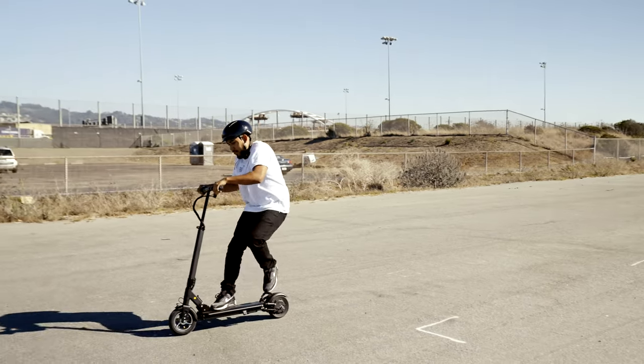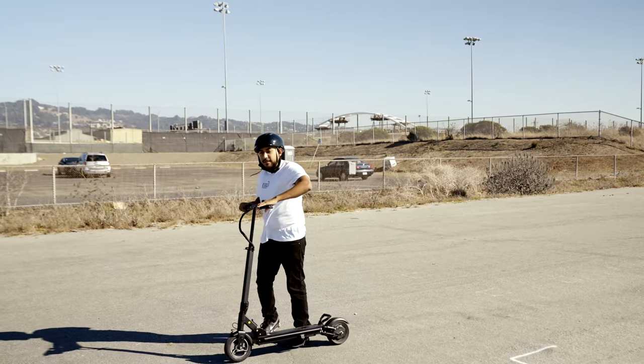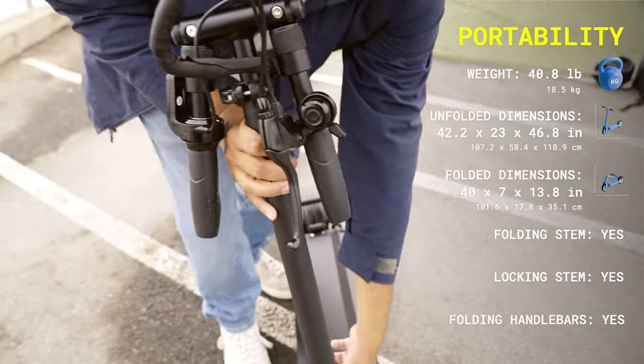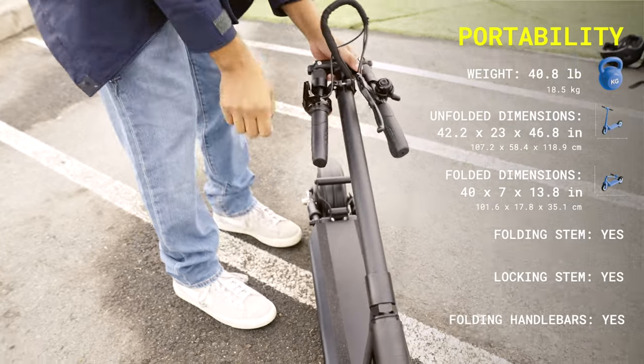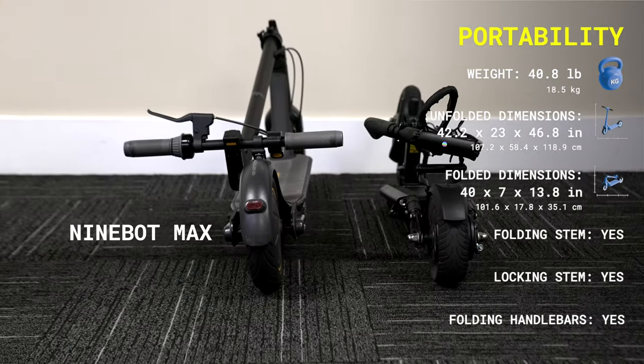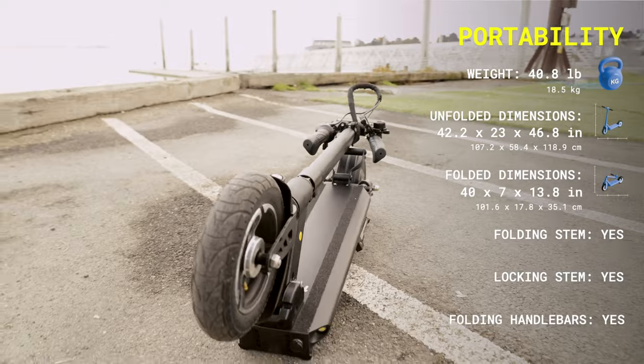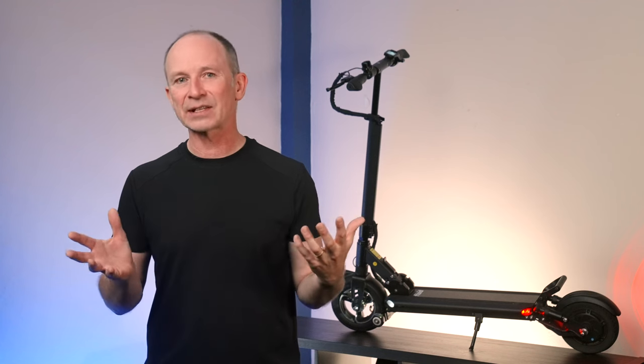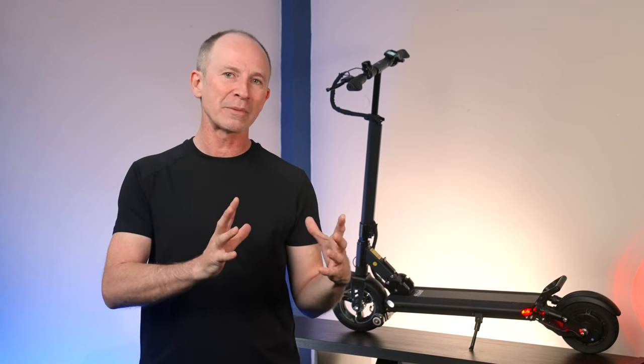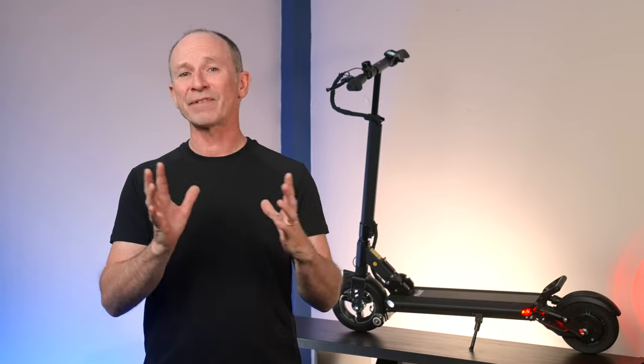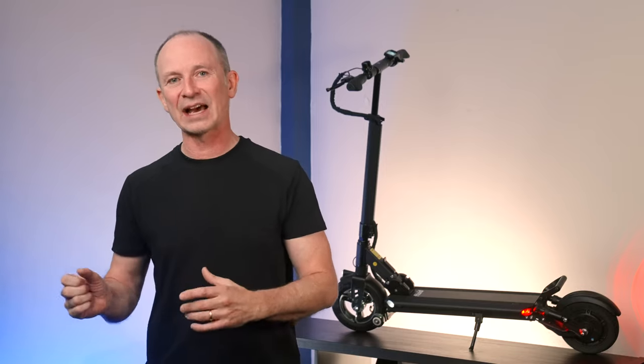The Horizon is a portability boss. Not as much as the Mosquito, but it folds down so much smaller than the Max or scooters like it. Folding bars are becoming a rarity these days. And yes, because it has them, it does take longer to fully fold than the Max, but stem folding is actually faster because you don't have to hunt around for the stem to deck latch.